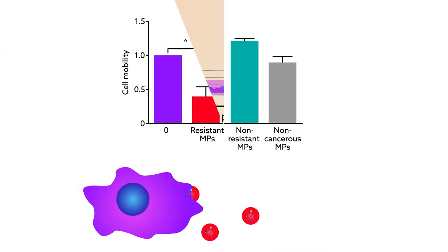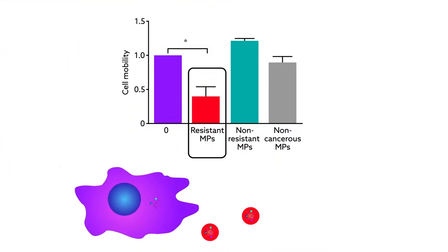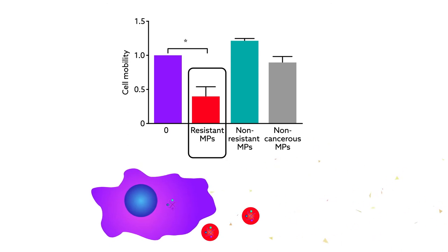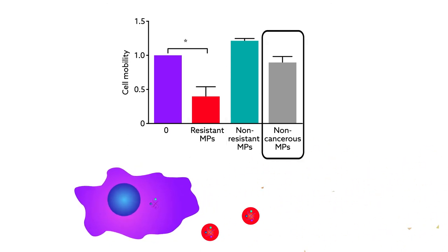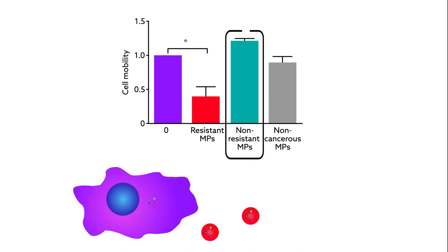Using in vitro assays, they found that macrophages exposed to microparticles from the drug-resistant cancer cells were less likely to travel towards chemoattractants, a type of chemical that would normally lure them in. Macrophages exposed to microparticles from non-cancerous cells or cancer cells that weren't drug-resistant showed no such impairment.